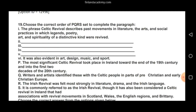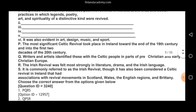Option six says: 'It was also evident in art, design, music, and sport.' Now let's read the four sub-options. P says: 'The most significant Celtic Revival took place in Ireland toward the end of the 19th century and into the first two decades of the 20th century.' Q says: 'Writers and artists identified these with the Celtic people in parts of pre-Christian and early Christian Europe.' R says: 'The Irish revival was felt most strongly in literature, drama, and the Irish language.' S says: 'It is commonly referred to as the Irish Revival, though it has also been considered a Celtic Revival in Ireland that had associations with revival movements in Scotland, Wales, the English regions, and Brittany.'